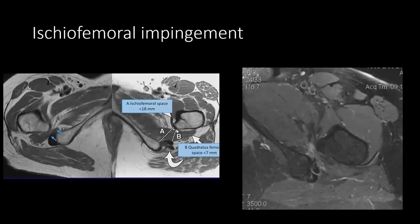Coming back to some anatomy again. This is the ischium, this is the hamstring muscle semimembranosus, this is the conjoined tendon — semitendinosus. And this is the quadratus femoris — here the quadratus femoris shows abnormal signal. We call it ischiofemoral impingement because of the narrowing of the space. Normal space between the femur and ischium should be around 15 mm; less than 12 mm is abnormal. In this case it is very, very narrow. There is edema here which is abnormal, and you can see the narrow space.